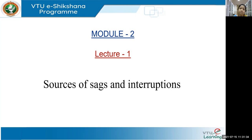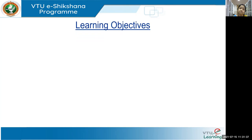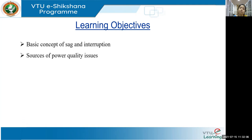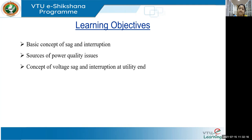Keeping all those things in mind, the learning objectives for this chapter: first, you will understand the concept of sag and interruption — which you have likely learned in module one. Next, sources of power quality issues — from where these are arising — and then the concept of voltage sags and interruptions at the utility end.